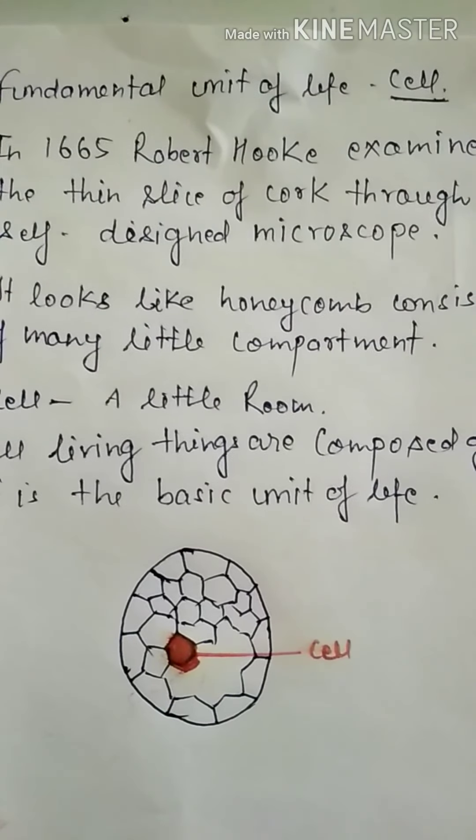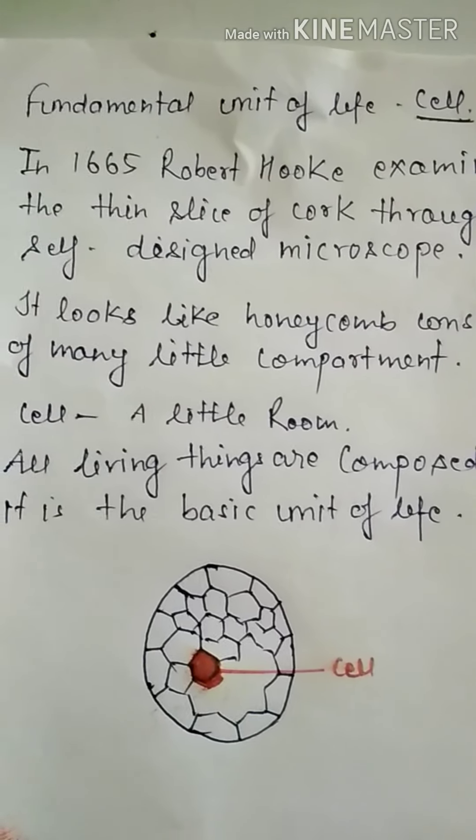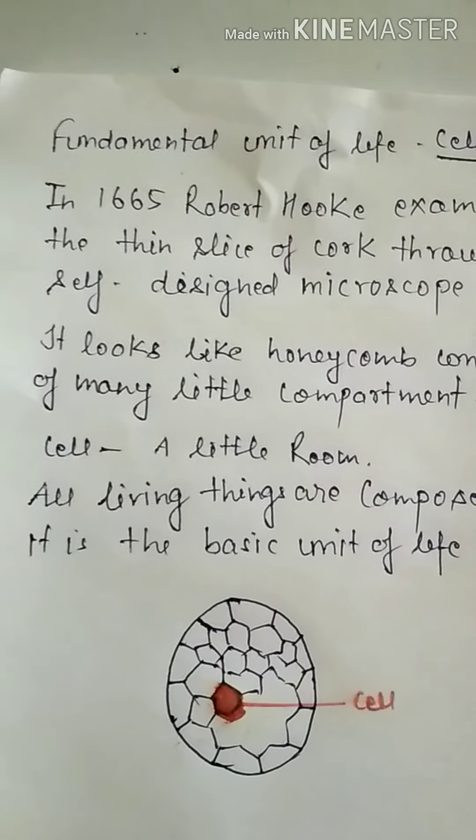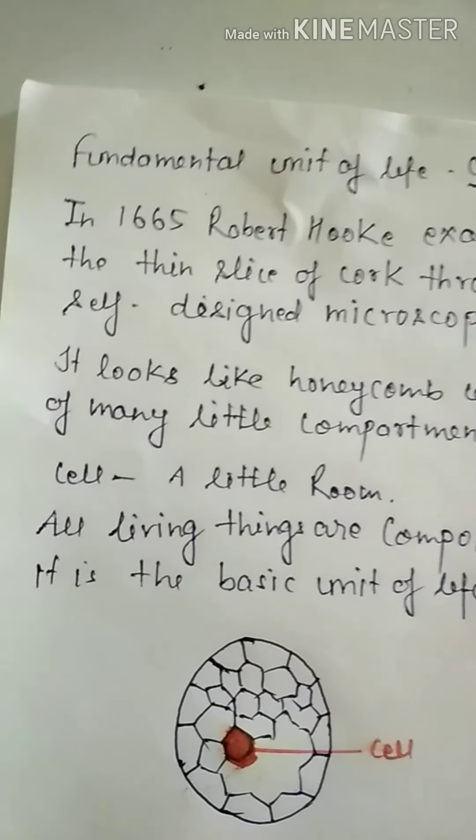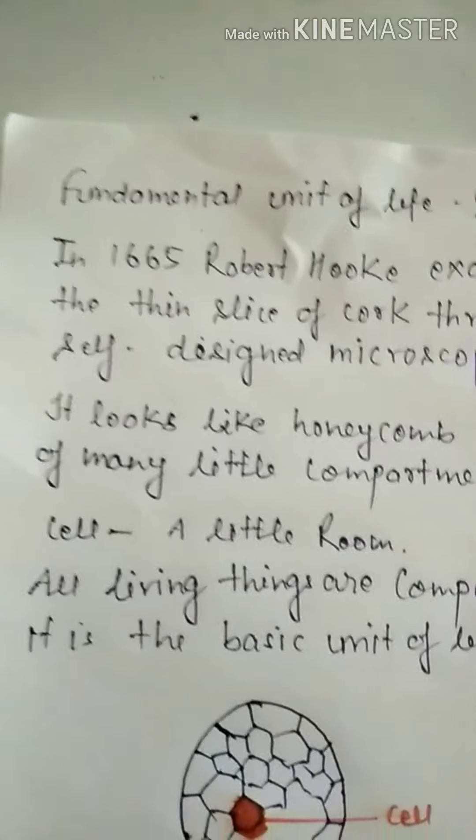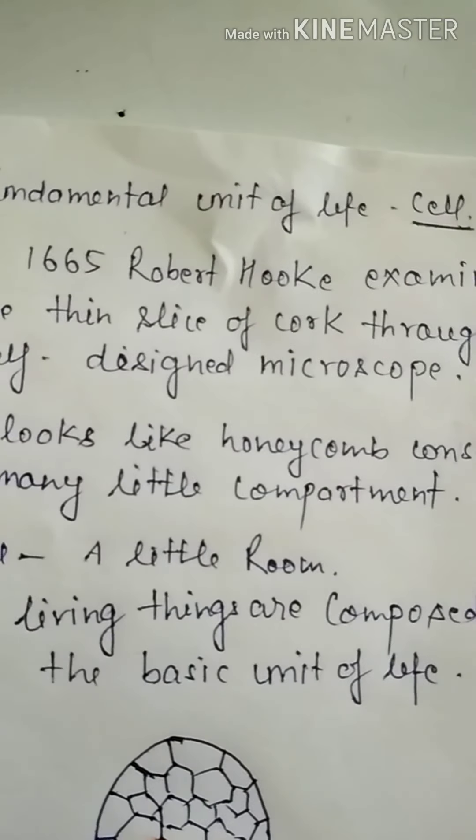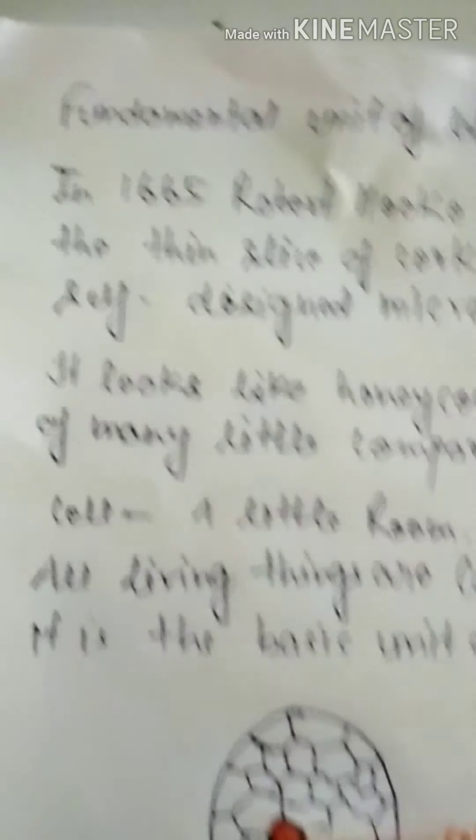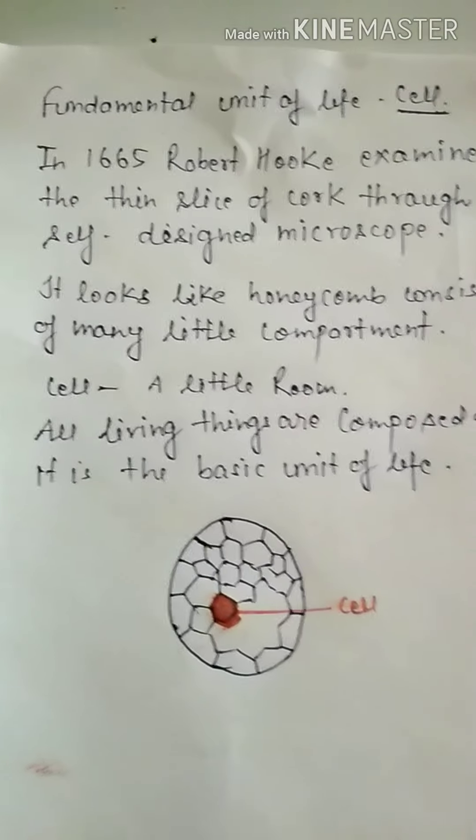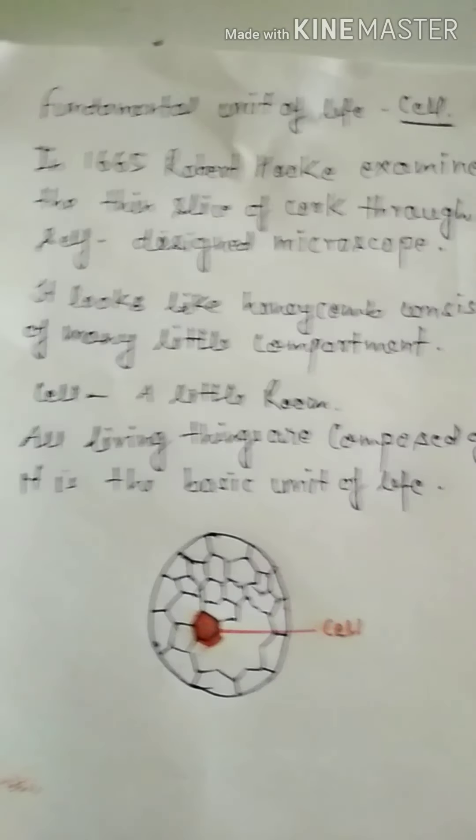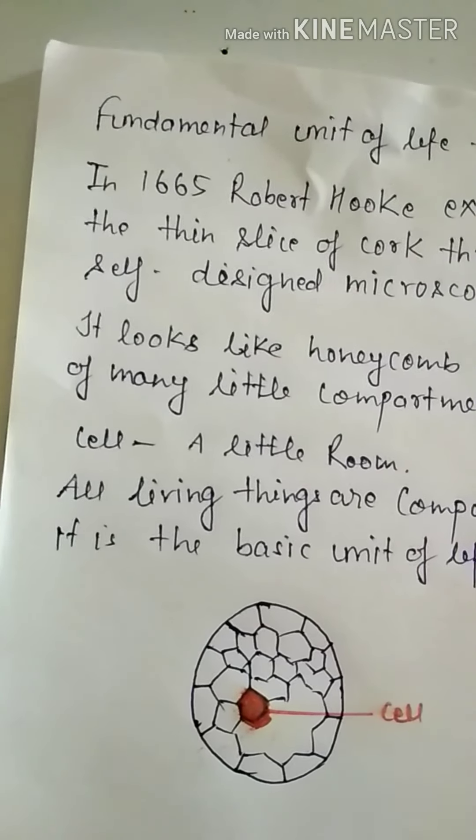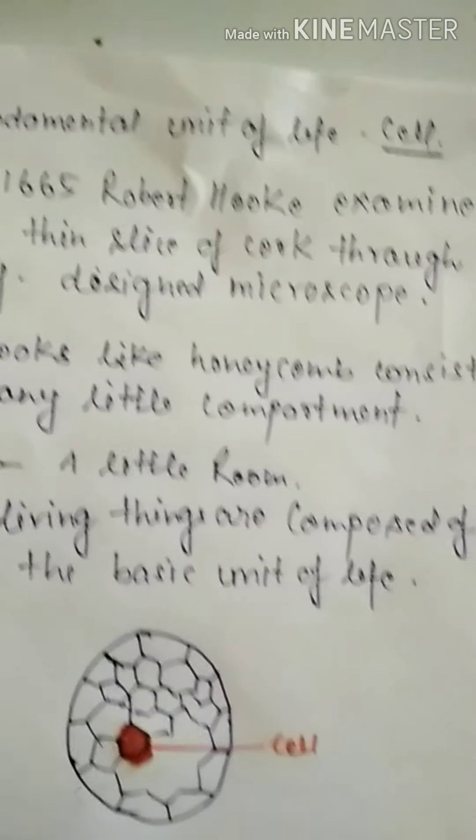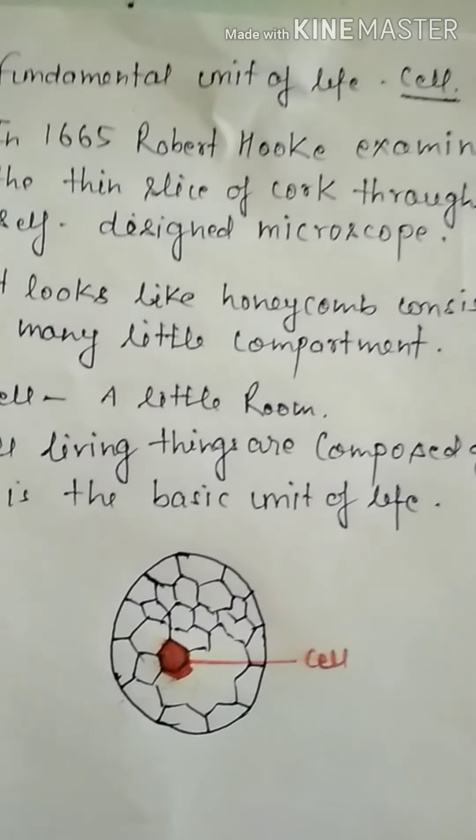In 1665, Robert Hooke examined the thin slice of cork through self-designed microscope. It looks like honeycomb. Honeycomb consists of many little compartments. In these figures, we see there are little compartments and a small yellow cell.